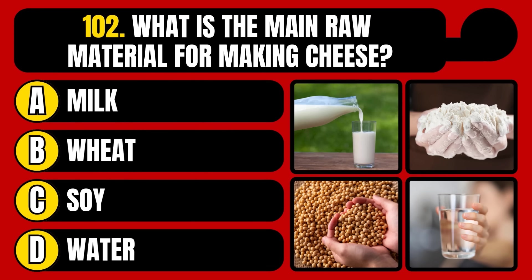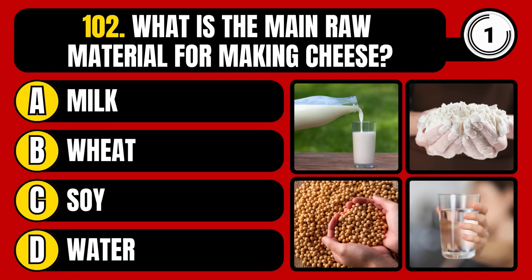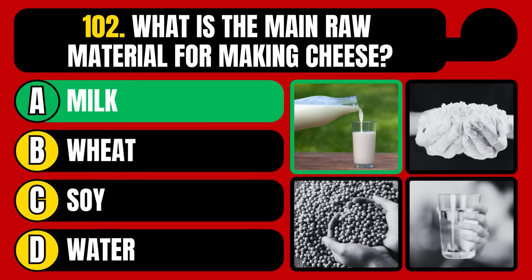What is the main raw material for making cheese? Milk, wheat, soy, or water? The correct answer is option A, milk.